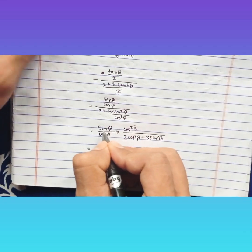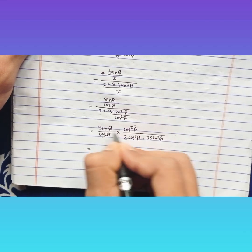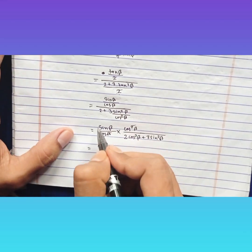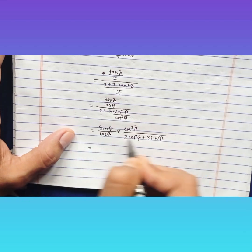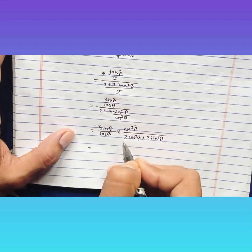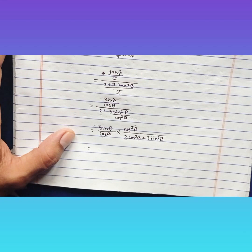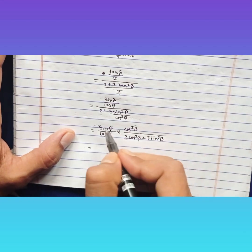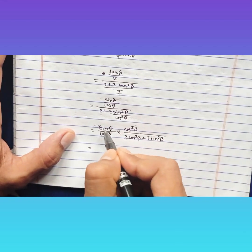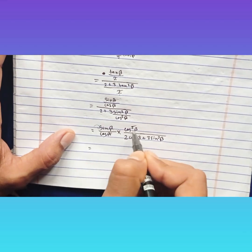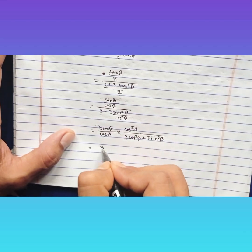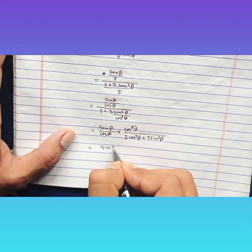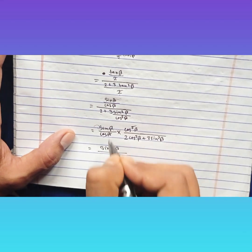In the numerator we have sin β cos β. Multiply numerator and denominator by 2: the numerator becomes 2 sin β cos β, which equals sin 2β. So we write sin 2β in the numerator.